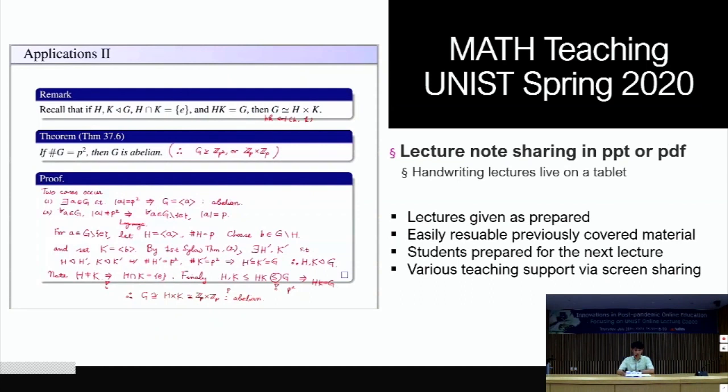And the second is to prepare a lecture note in advance for sharing. So this is one typical slide that we use for a class. Basically, what we do is we write down theorems, statements of theorems and remarks and definitions, and we leave some part of the page blank so that students can expect what to be discussed in the next lecture. So as you can see on the slide, what's written in red is something that we write during an online lecture and discuss with students what needs to be discussed.